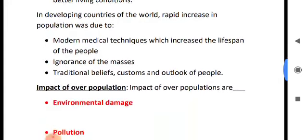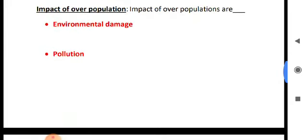Impact of overpopulation: the first impact is environmental damage. A large number of people consume more natural resources such as fresh water, land, mineral resources, etc. More land is brought under cultivation. Increased mining for minerals causes further environmental damage. Pollution: uses of more fossil fuels mean more pollutants are released from factories, the industrial sector, etc.